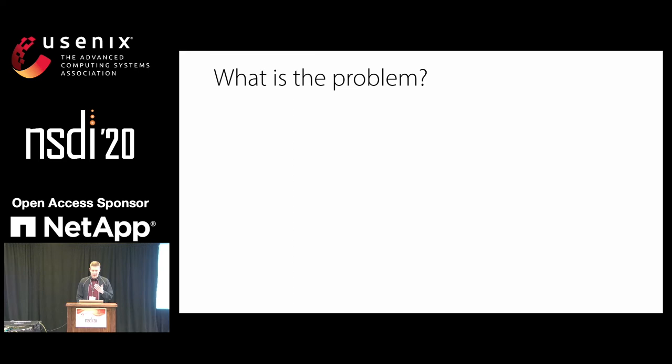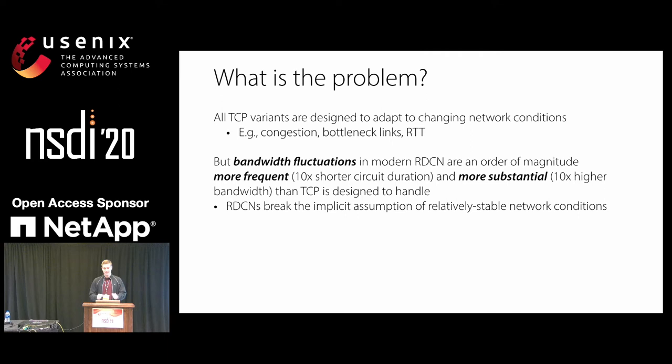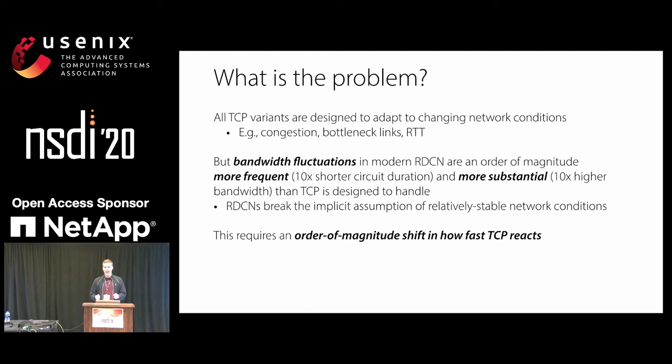What is the underlying problem here? All TCP variants have been designed to adapt to changing network conditions — congestion, bottleneck links, or RTT changes due to queuing. But the bandwidth fluctuations in this reconfigurable data center network are an order of magnitude more frequent and more substantial than TCP variants have been designed to handle, breaking an implicit assumption about network stability. Therefore, we need an order of magnitude shift in how fast TCP reacts.